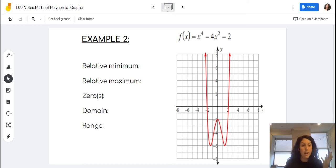We're still looking at similar vocabulary, trying to find the same five vocabulary terms, but now looking at a graph for the function x to the fourth minus 4x squared minus 2.